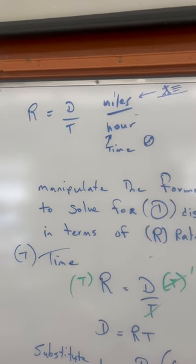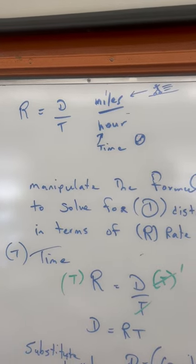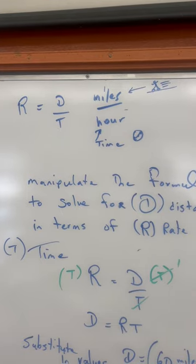The problem is this is what we remember. We remember that rate or speed is distance over time, miles per hour. Everybody knows 60 miles an hour, 100 miles an hour. Distance over time, right?